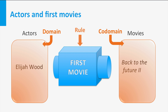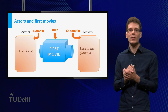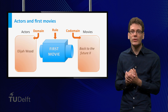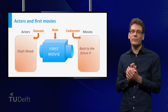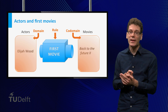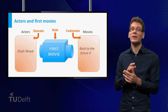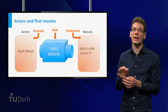And finally, a rule that associates to every element in the first set an element in the second set — in this case, take the first movie this actor was in. We will deal with the concepts of domain and co-domain in more detail in section 1.6.